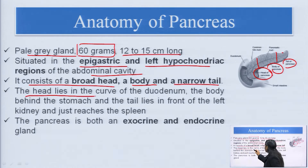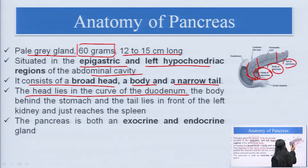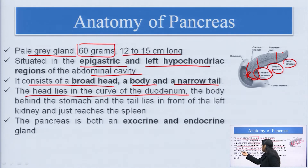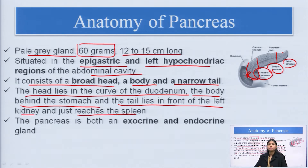The head of the pancreas lies in the curve of the duodenum. The significance of this location is that secretions from the pancreas come into the duodenum through the pancreatic duct. The body lies behind the stomach, whereas the tail lies in front of the left kidney, just reaching the spleen. This is the position of how the pancreas is located.